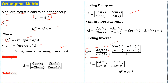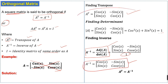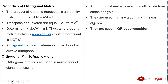In the adjoint, we change the sign of these elements and the position of these elements, divided by the determinant of matrix A, which is 1. So we have the inverse of this matrix. We can see that A-inverse is equal to the transpose of matrix A, which means the given matrix is an orthogonal matrix.